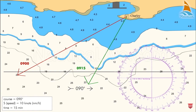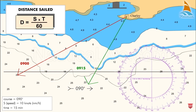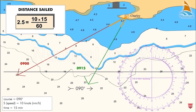With a speed of 10 knots, we calculate the distance: Distance equals speed multiplied by time over 60. Speed is 10 knots and time is 15 minutes, so 10 times 15 divided by 60 gives us a value of 2.5 nautical miles. The distance from the 0900 position to the 0915 position is 2.5 nautical miles.